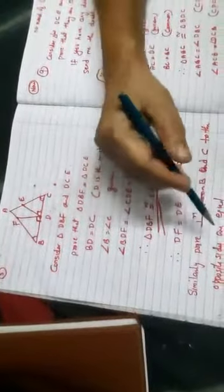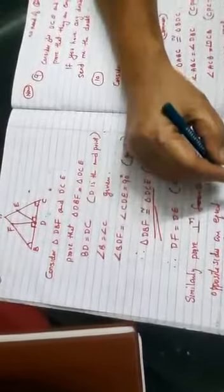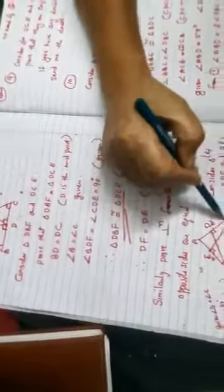prove perpendiculars from B and C to the opposite sides are equal. For that, draw a figure like this. Then consider the triangle BDC and BEC.